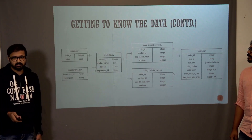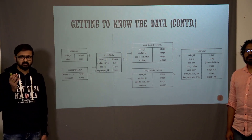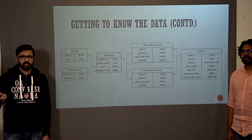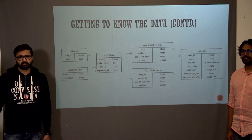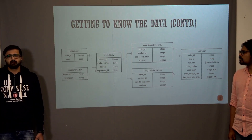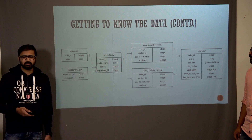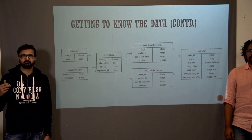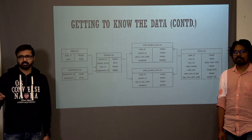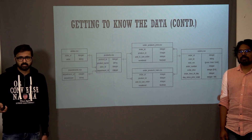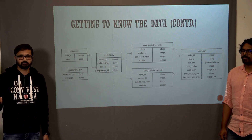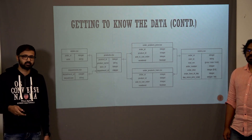This is the relational chart of the data. We have a products table that maps product ID to product name, and it has an aisle ID indicating which aisle the product is in. Each product belongs to a department, mapped to corresponding tables. We have two main tables: prior orders, which contains orders placed in the past, and train orders, which contains the latest order data for users. Then we have the orders table, which is the main table showing order details — time of day, day of week, and so on.